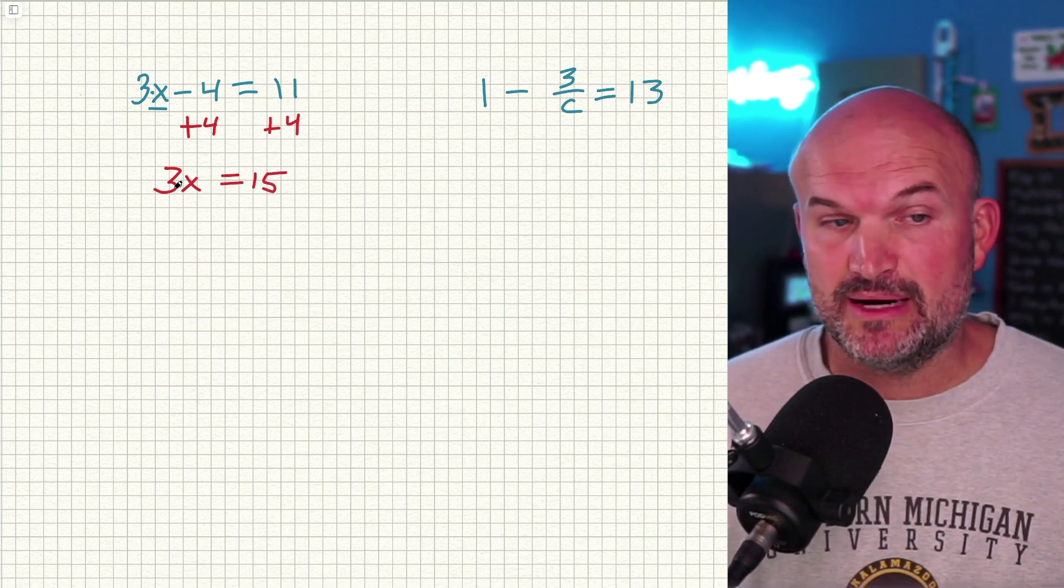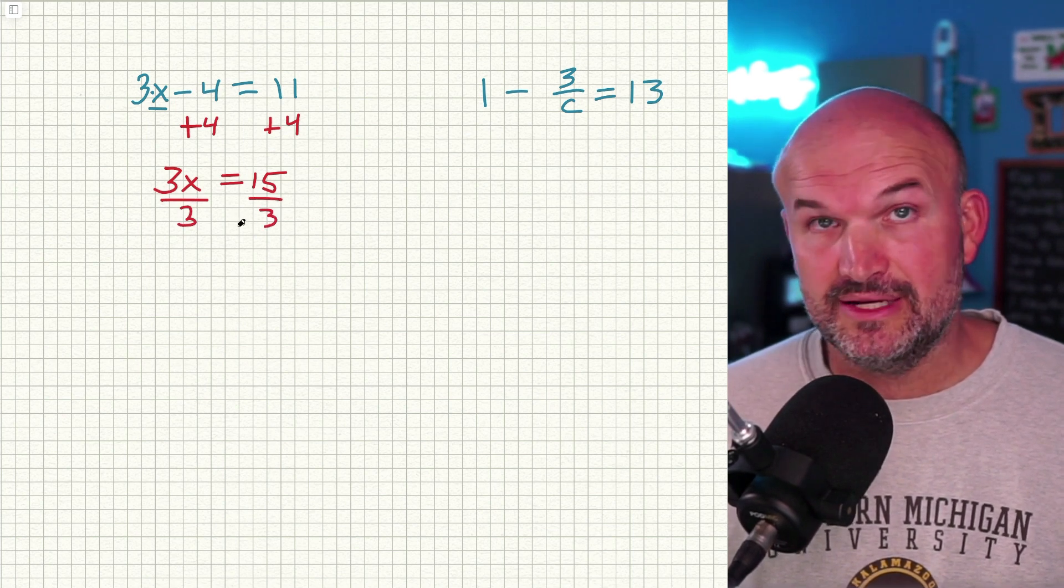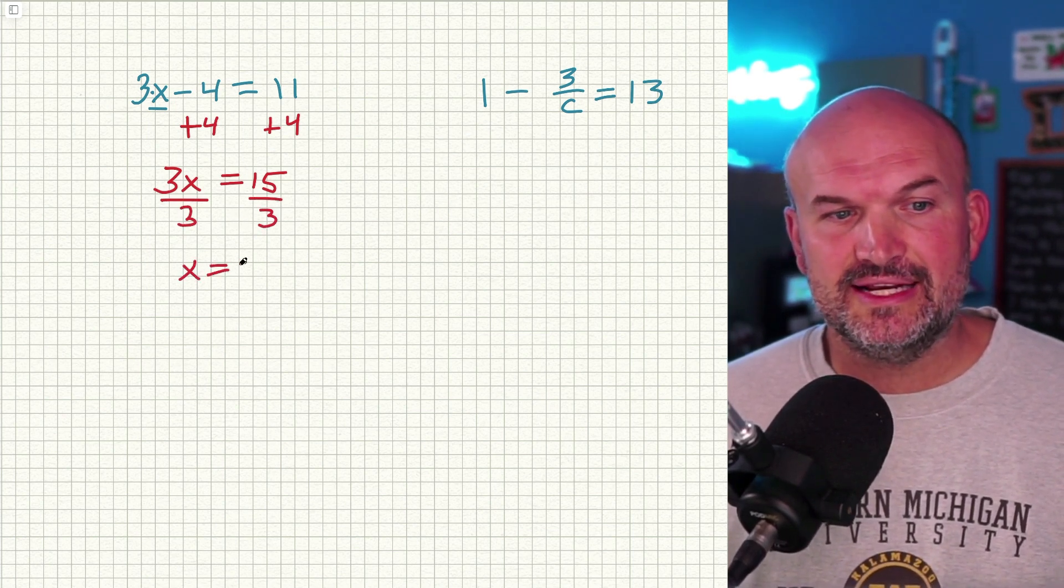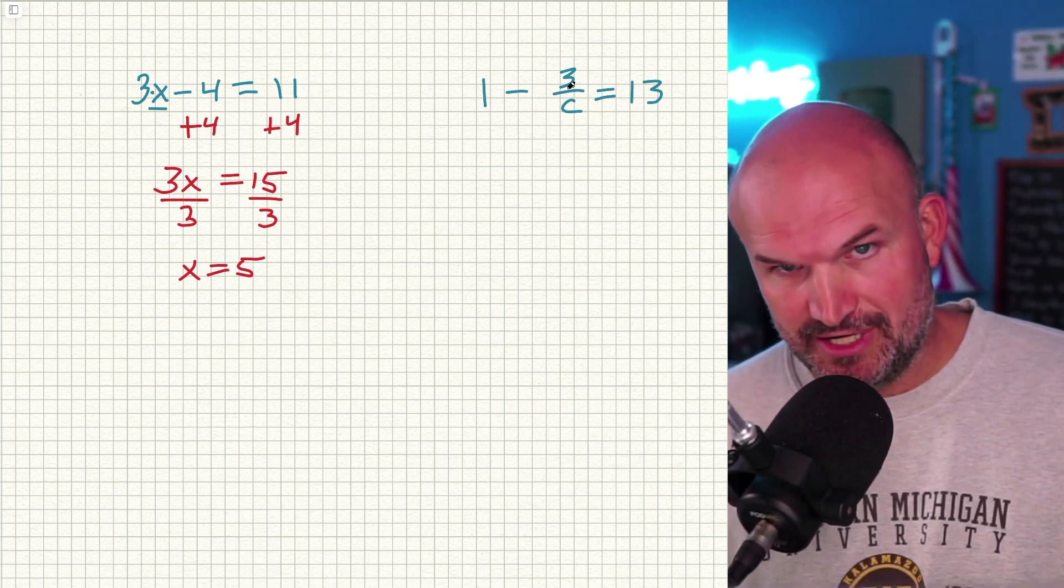Now, you can see my X is being multiplied by three. So to undo multiplication, we are going to divide by three on both sides. And we're going to get X = 5. So now let's apply that process to over here.